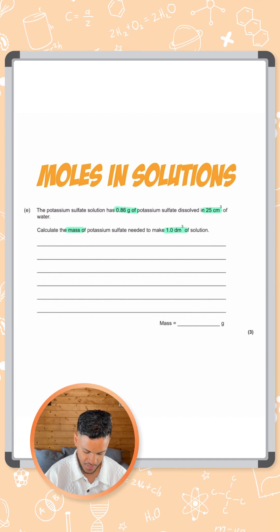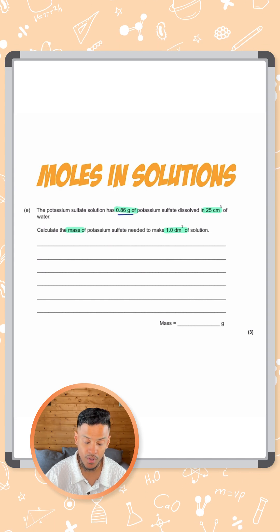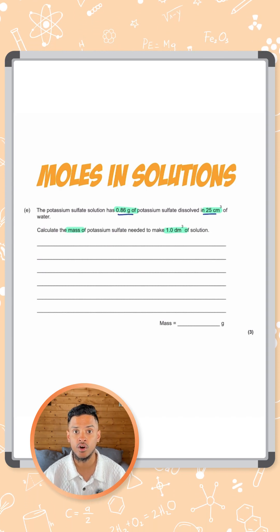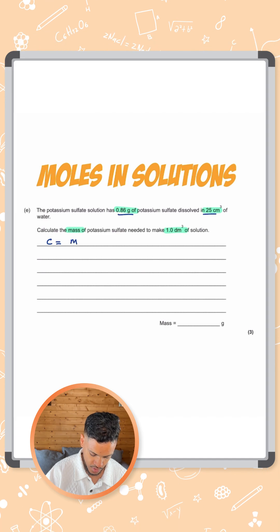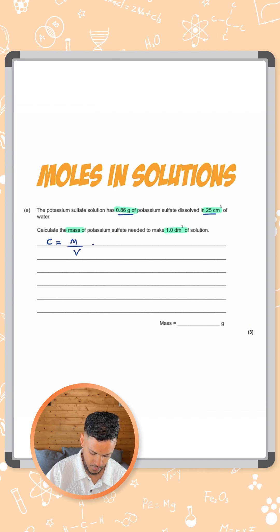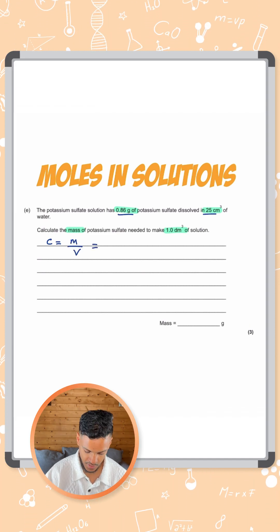What we need to do first is use these two values to work out the concentration of the solution. Concentration is equal to mass over volume. So we can just sub the numbers in here.